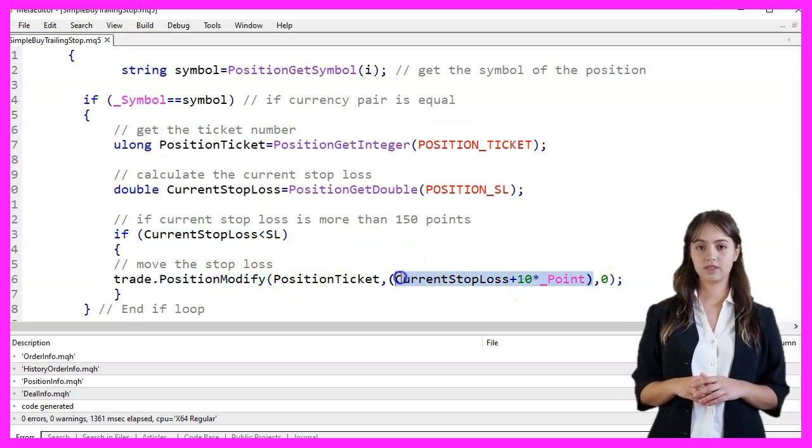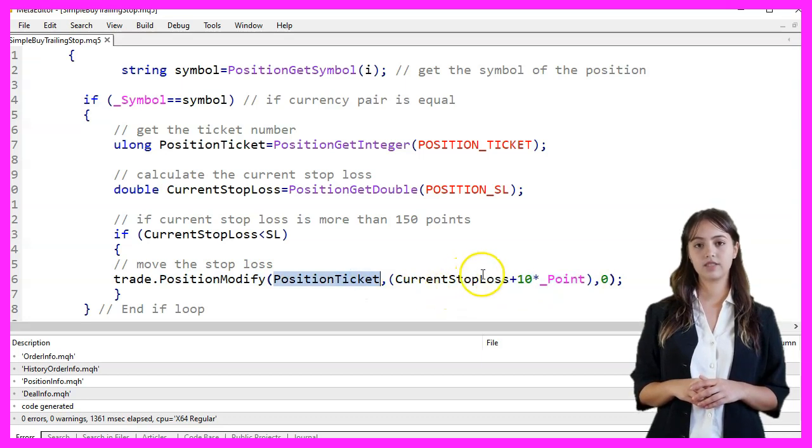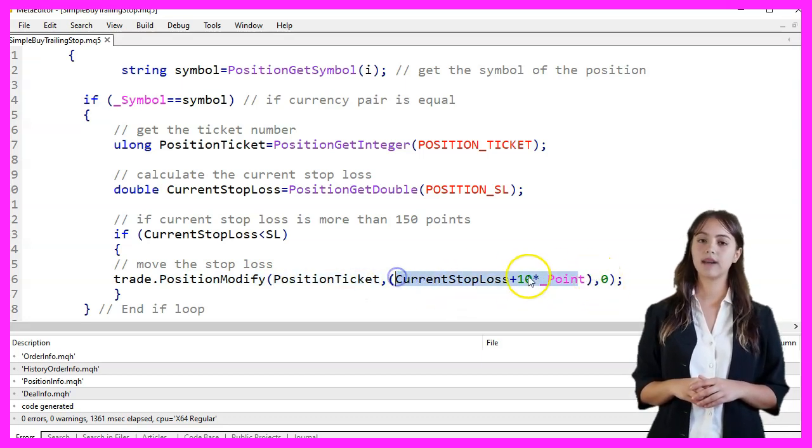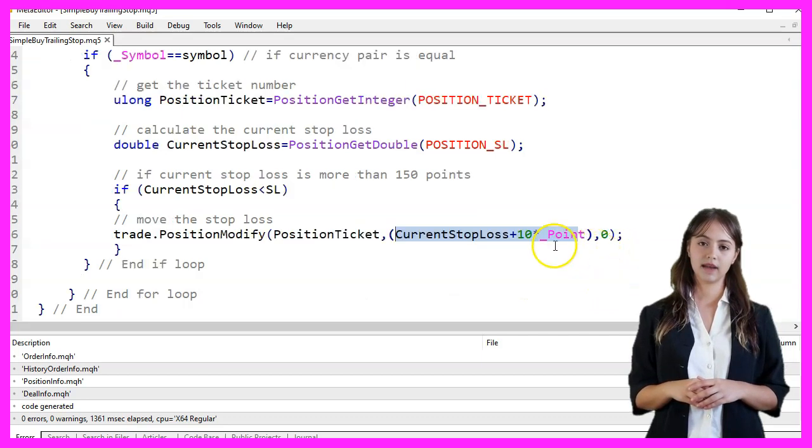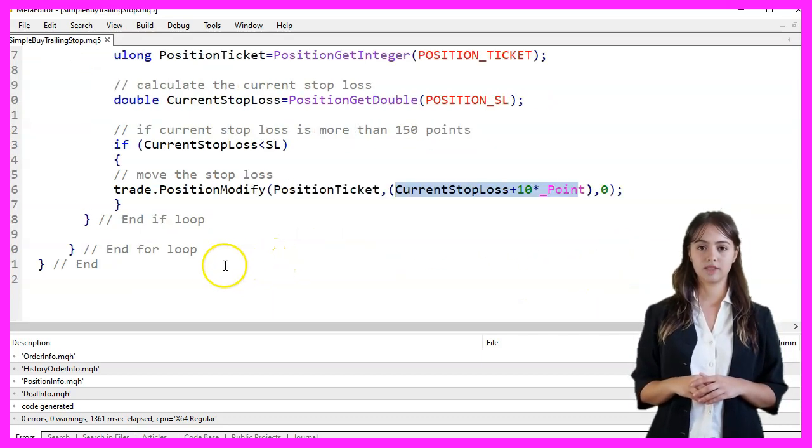This function takes the PositionTicket, NewStopLoss, and NewTakeProfit set to 0 as parameters. Finally, we compile the code by pressing F7.